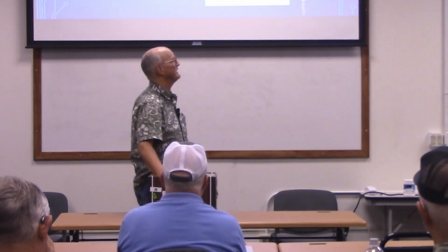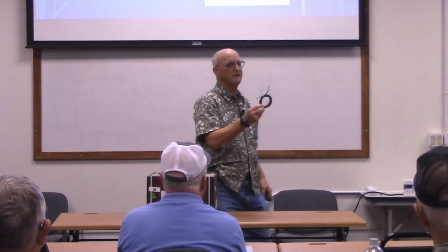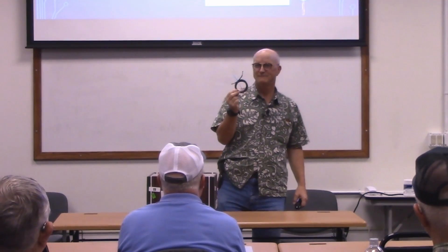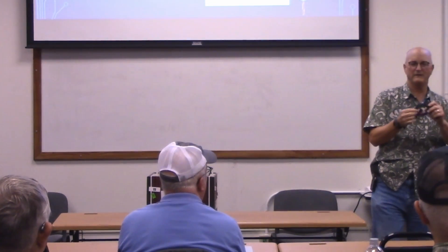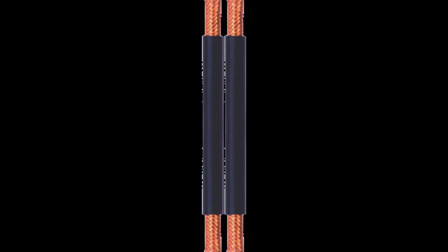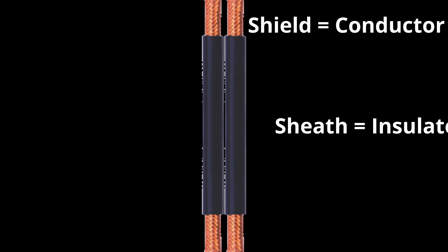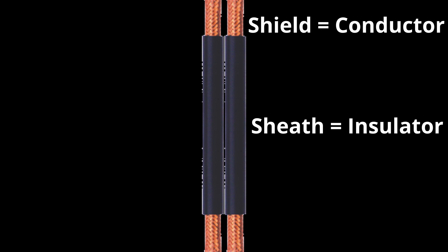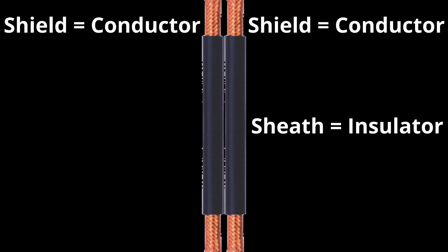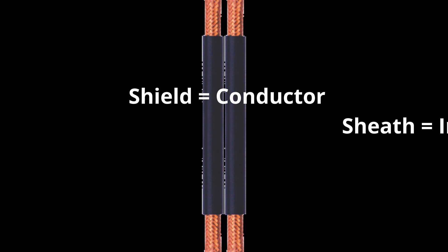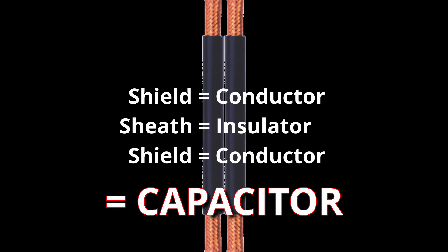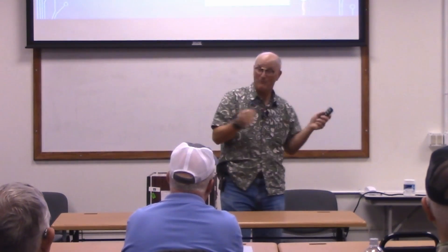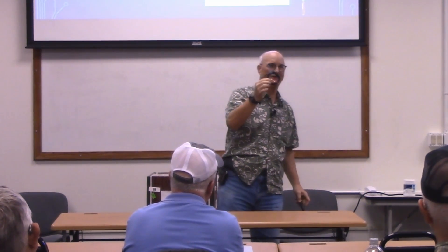How do you get a capacitor in parallel with the outer skin of the shield? It's easier than you might think. All we do is take our coax and wrap it up into a little coil. You say - doesn't that just increase the inductance? It does, but also consider: you have a conductor, an insulator, and then more conductor. Conductor-insulation-conductor - that's a capacitor. By wrapping the coax into a coil, we increase the parallel capacitance at the same time as increasing the inductance of the outer shell of the shield.